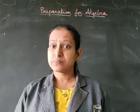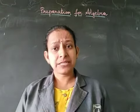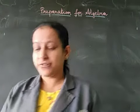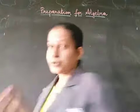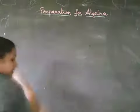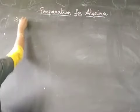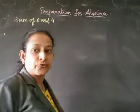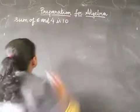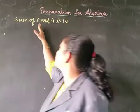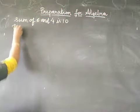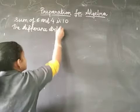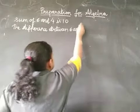You have learned that whenever we add or subtract or multiply or divide any number, whatever answer we are getting is the number itself. For example, the sum of 6 and 4 is 10, and the difference between 6 and 4 is 2.